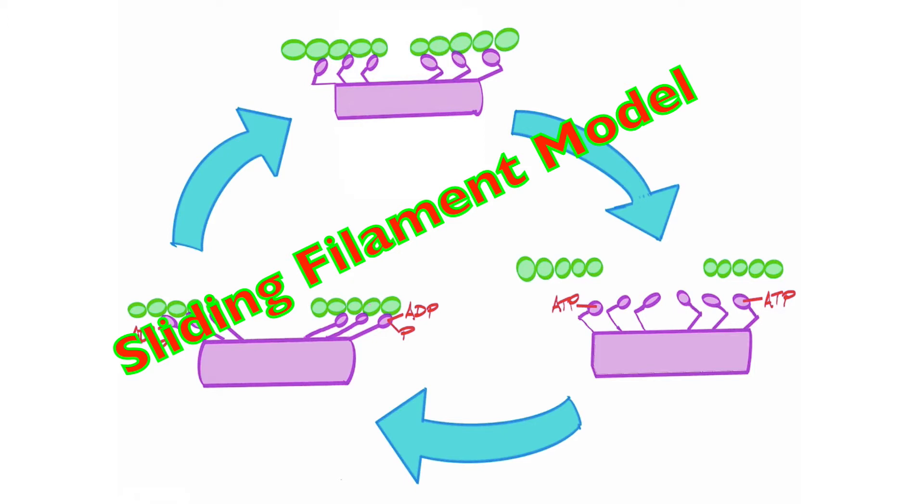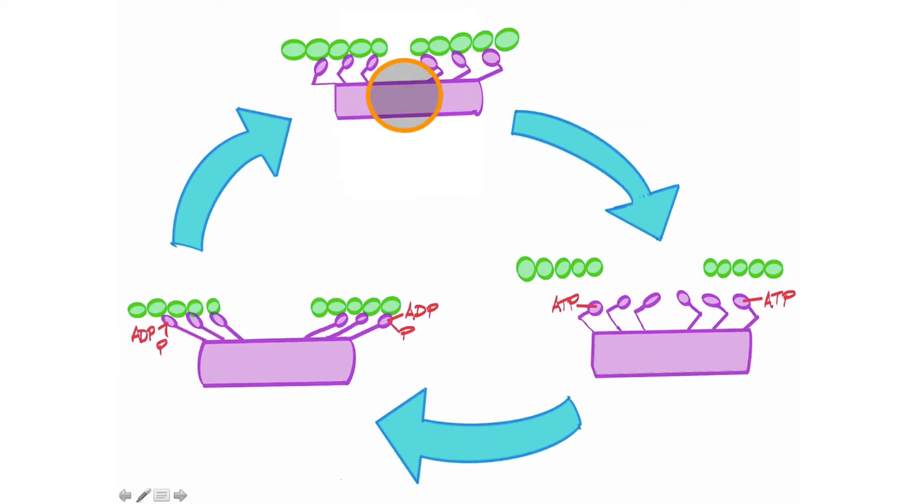This may be outlined in four or five steps, and because this is a cycle we can start anywhere. I'm just going to start at the top and we're going to run through this a few times. At the top what we see right here is the power stroke, where the thin filaments on the left and right have been slid to diminish the H zone.